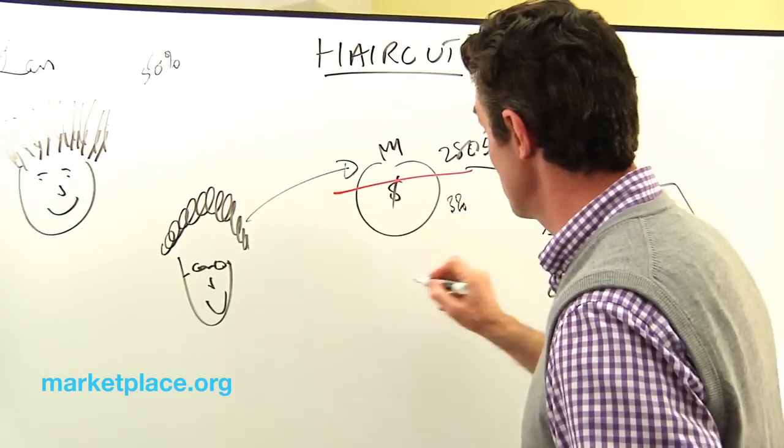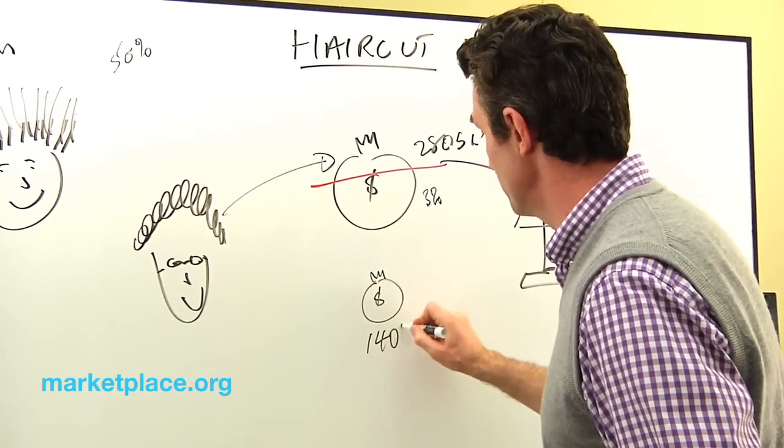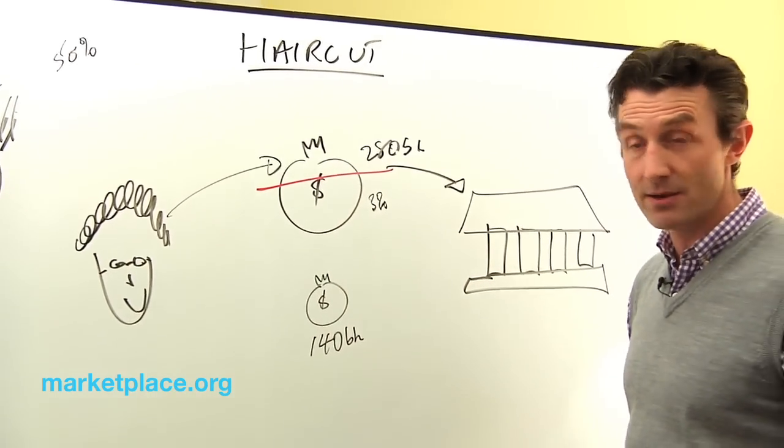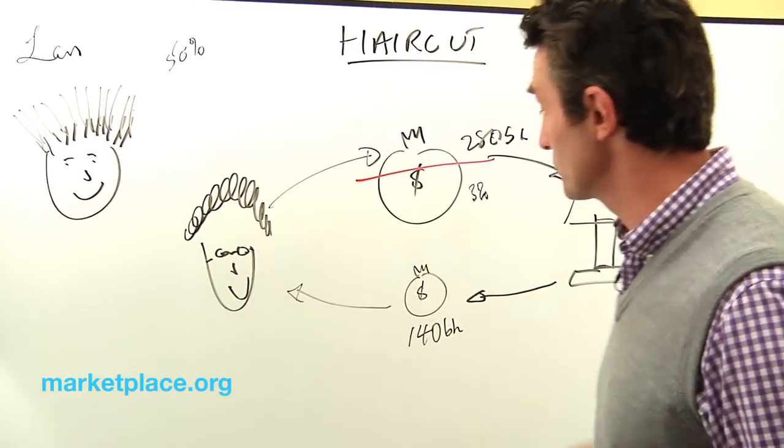And it means that because it's a 50% haircut, this big bag has now been reduced to a very small bag of just $140 billion. It's been cut in half. There's your haircut, straight in half like that. And that's the money that's going to be returned from Greece back to bankers like Françoise.